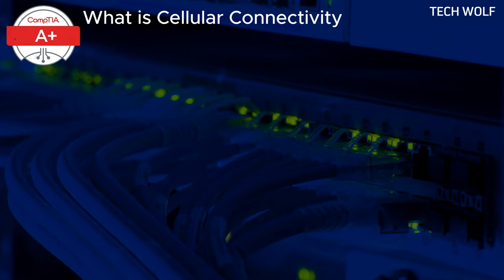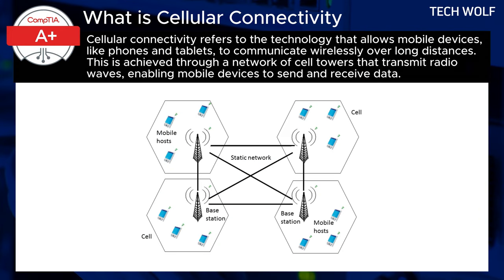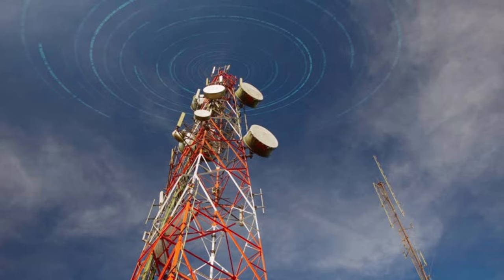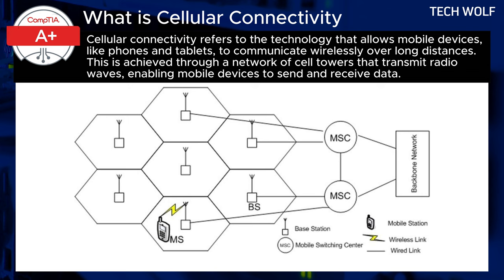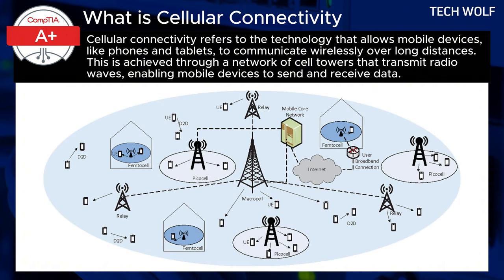What is cellular connectivity? Cellular connectivity refers to the technology that allows mobile devices like phones and tablets to communicate wirelessly over long distances. This is achieved through a network of cell towers that transmit radio waves, enabling mobile devices to send and receive data. These towers are strategically placed to provide extensive coverage, and the system is designed to hand off connections between towers as you move, ensuring continuous service for phone calls, internet access, and other mobile services.